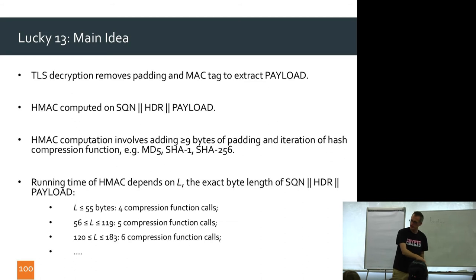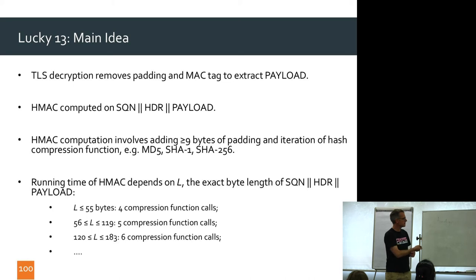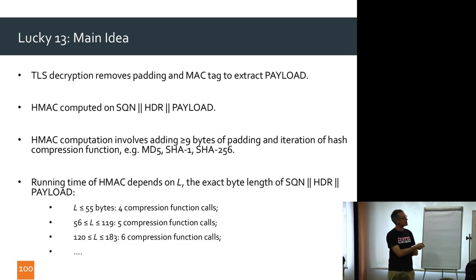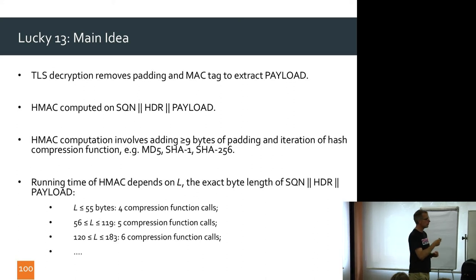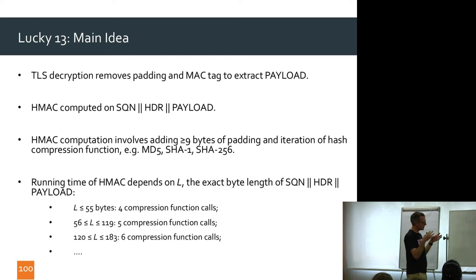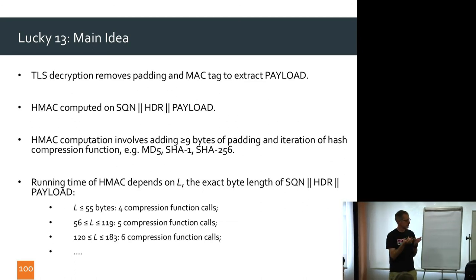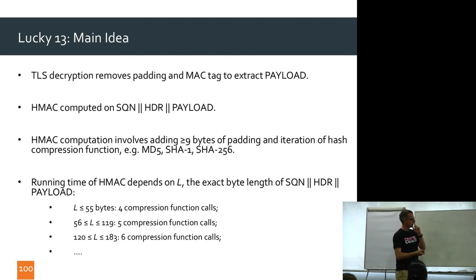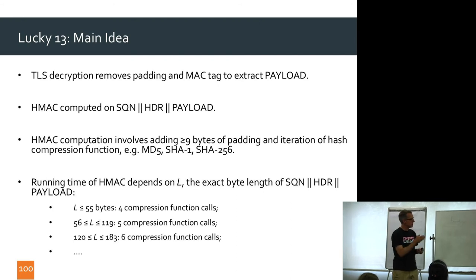If the input length to the hash is less than 55 bytes, you need 4 compression function calls. Between 56 and 119 bytes, you need 5. Between 120 and 183 bytes, you need 6. The number of compression function calls increases in jumps depending on the number of bytes processed. This is the timing channel — different amounts of input to the MAC mean different numbers of compression function calls, which means different timing.